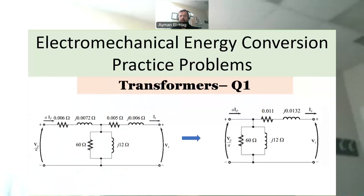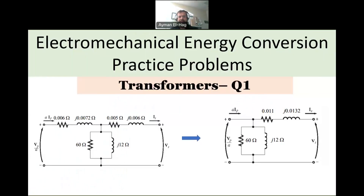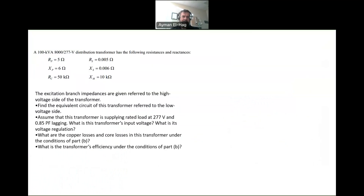Hi everyone, and welcome back to the series of electromechanical energy conversion practice problems. Today we'll start with the transformers. So let's see this question. It says here it's a 100 kVA transformer, 8,000 by 277 — this is the primary voltage and this is the secondary voltage. It's a distribution transformer.